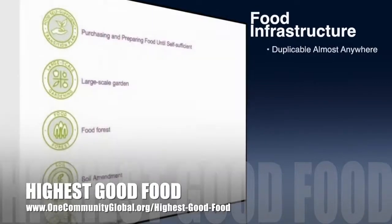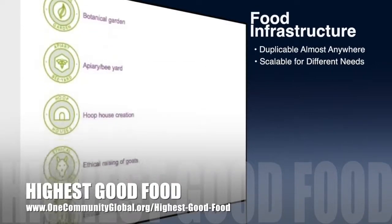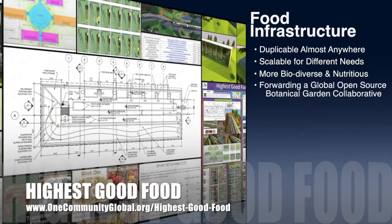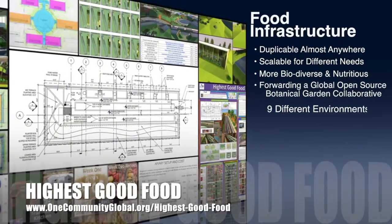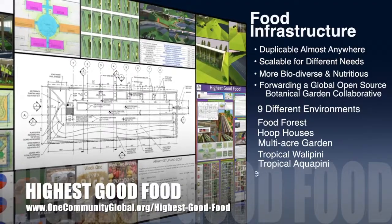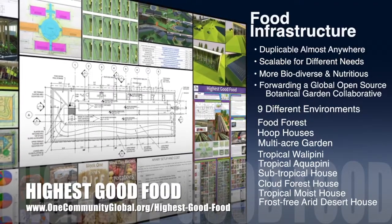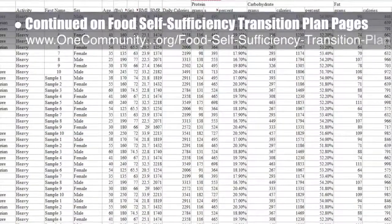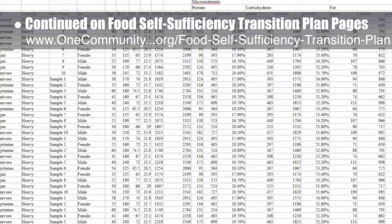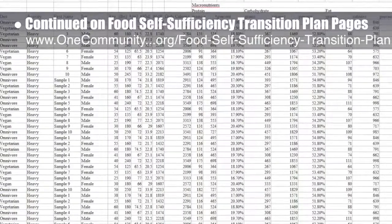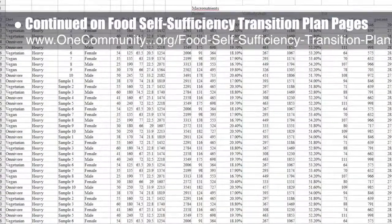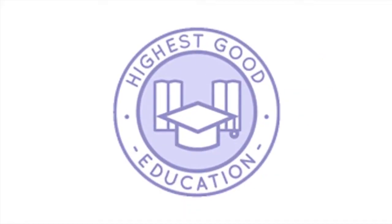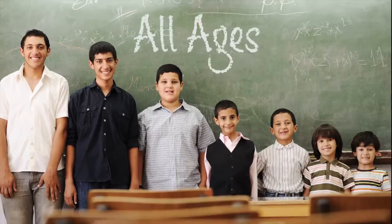One Community's approach to highest good food is duplicable almost anywhere, scalable for different needs, more biodiverse and nutritious, part of forwarding a global open source botanical garden collaborative, and includes nine different free shared and duplicable growing environments. This week the core team continued work on the formulas and data for the food calculations on the food self-sufficiency transition plan pages, bringing it to approximately 75% completion, as you can see here.